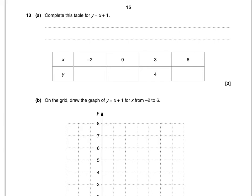Complete this table for y equals x plus 1. In the table we've got x values of minus 2, 0, 3 and 6. And we're told the y value for x equals 3 is 4.